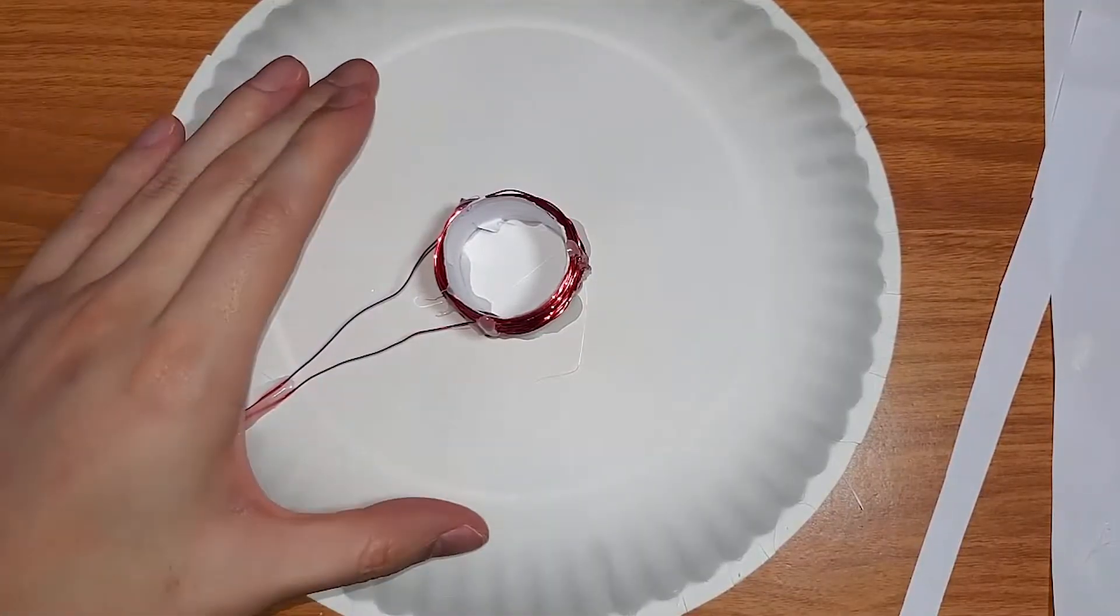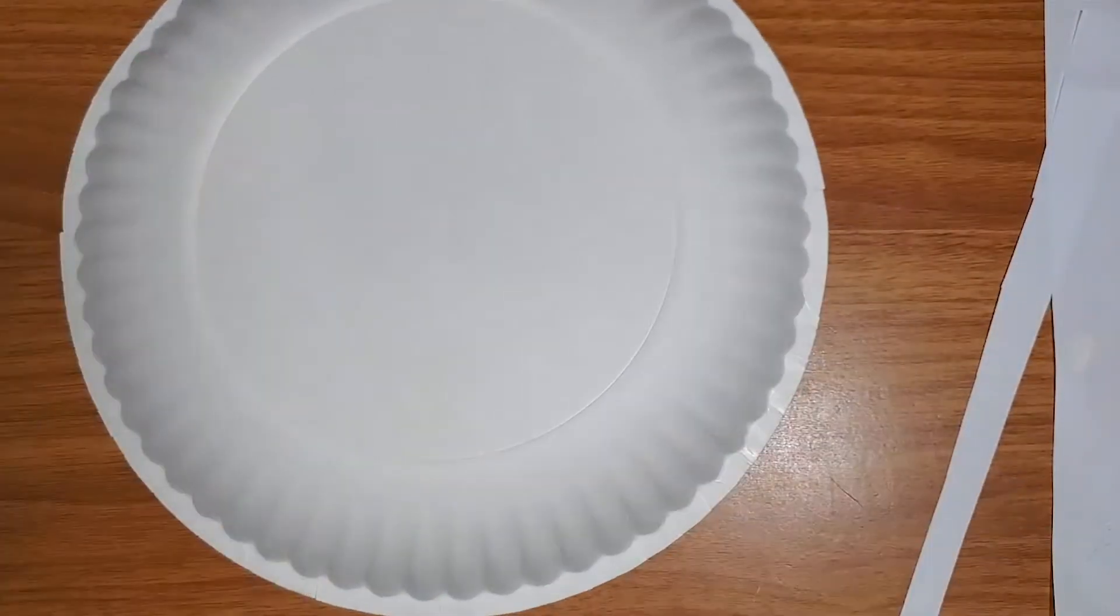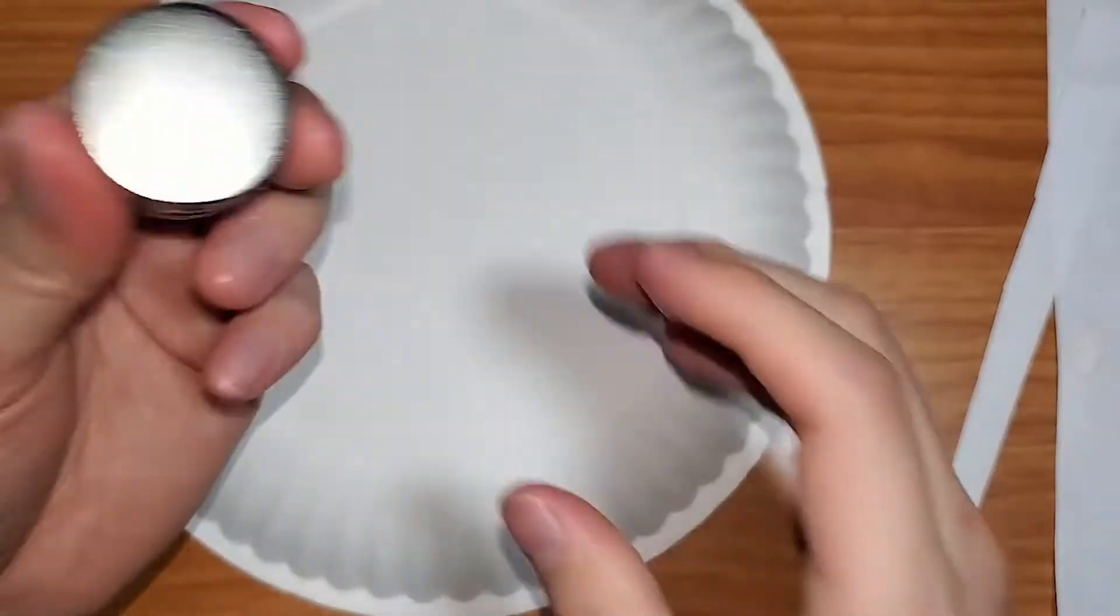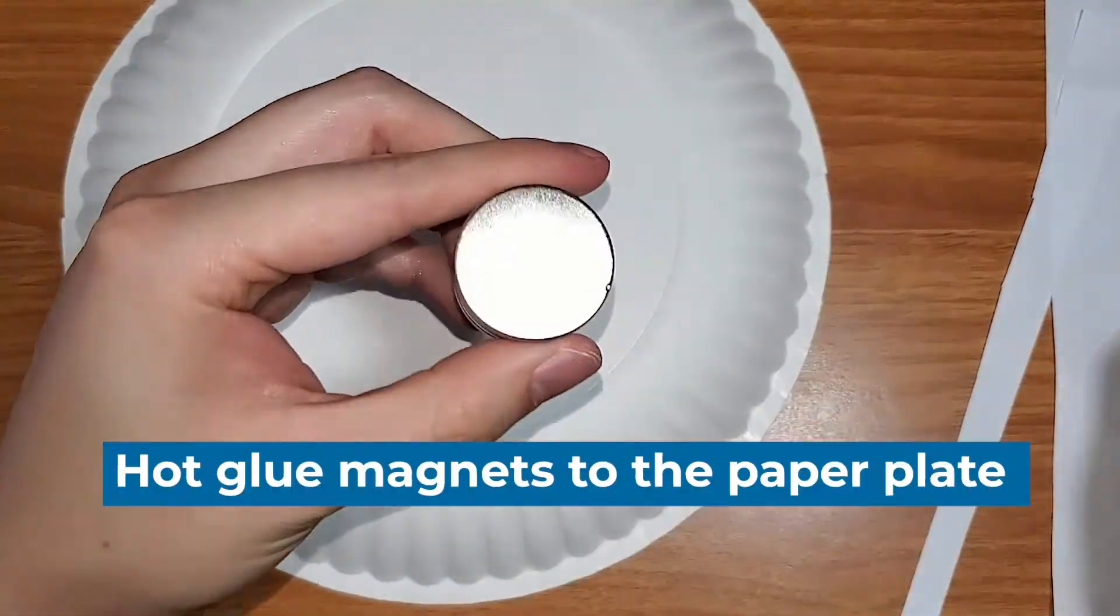With our top half of the speaker done, we're now going to focus on the bottom half of the speaker. We're going to go ahead again, take another paper plate, and this time we're going to hot glue our magnets right onto the middle.